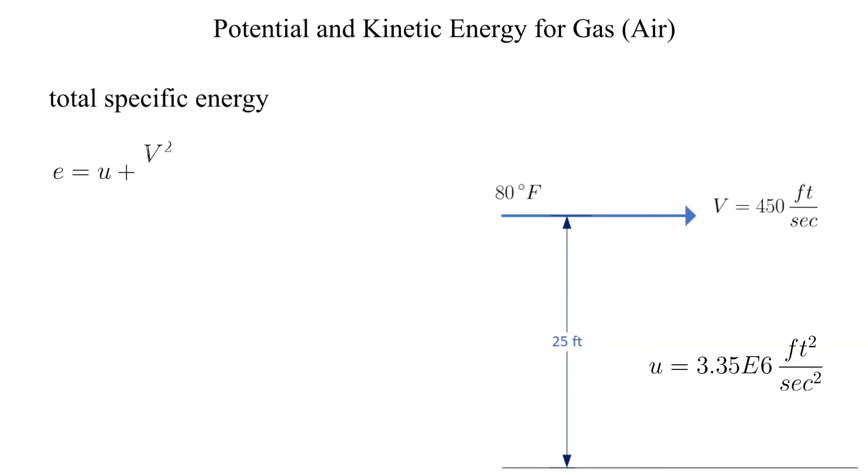Next, we add the three energies to get the total specific energy. We can see right away that the magnitude of the internal specific energy is significantly greater than both the specific kinetic and potential energies. It is quite common to consider the specific kinetic and potential energies as negligible, but we will include them for completeness.